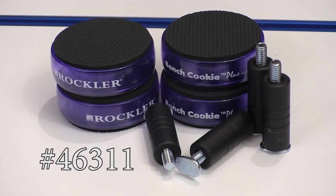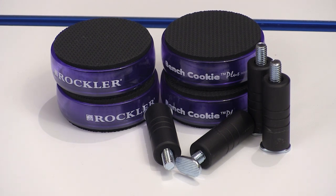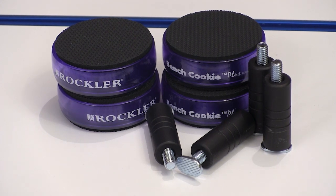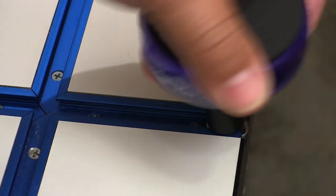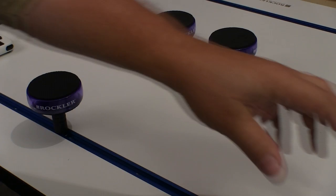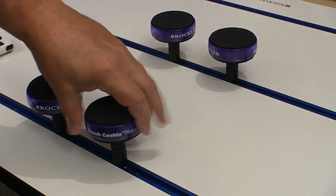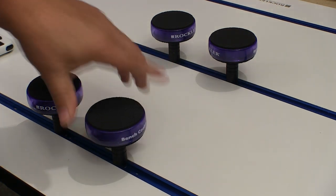Since so many of us already use the Rockler bench cookies, they came up with a set of T-track risers that lets you use them on the table. The T-track risers come with these bolts that fit into the T-tracks and screw into the bottom of the bench cookie plus. And that lets you slide the assembly to wherever you need it on the table. And when you have them located properly, you just spin the cookie down to tighten it into the track.